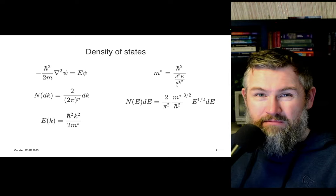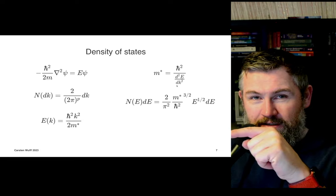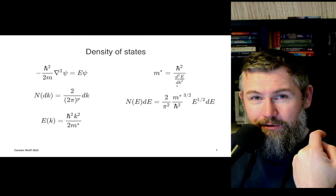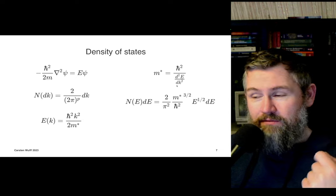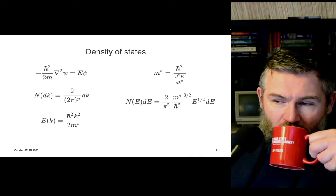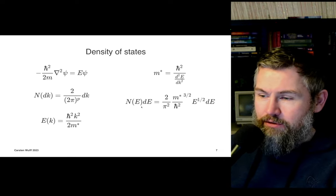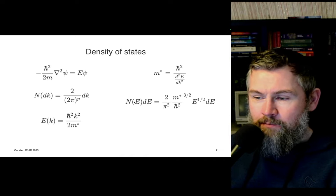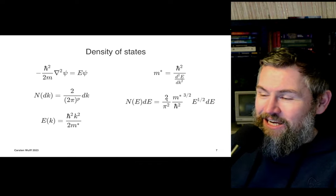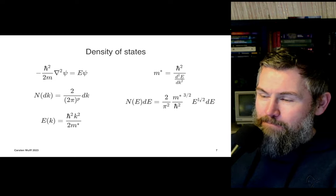Where you travel in the silicon unit cell, the effective mass changes. That's interesting - it means electrons traveling in one direction in the silicon lattice versus another direction don't have to have the same effective mass; it can be different. When we put all the equations together, we get an expression for the density of states as a function of energy, given by 2/(2π) and so on, times the square root of the energy.